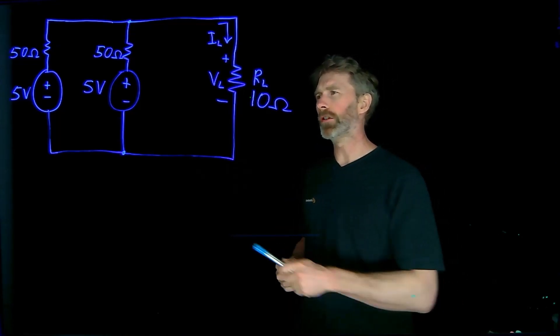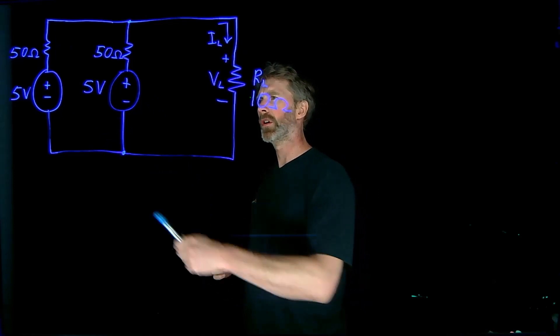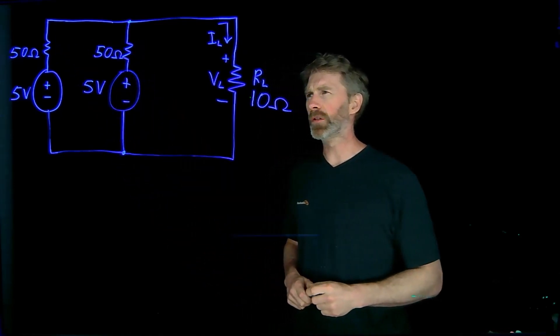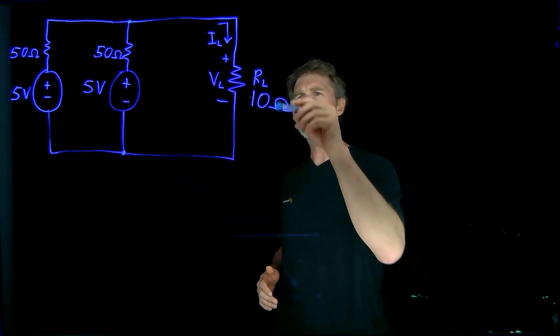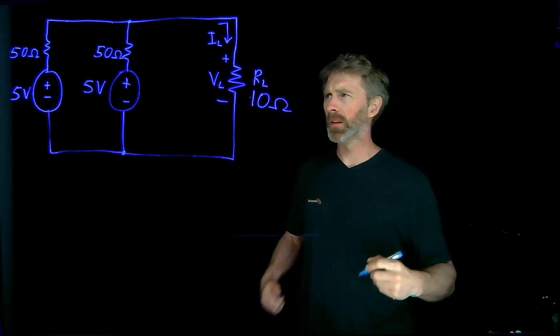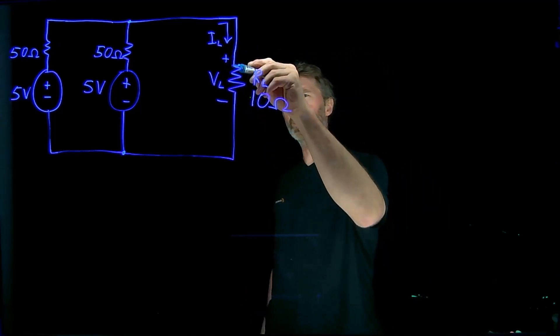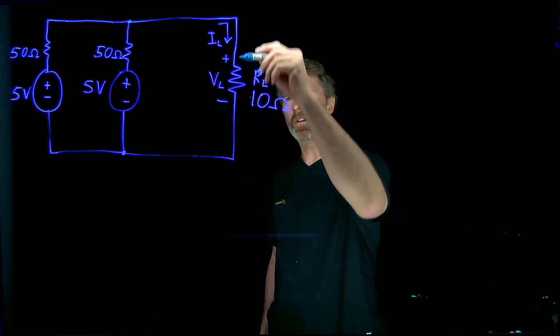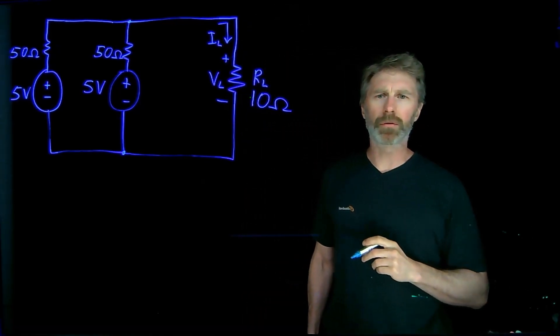So what we have here are two parallel voltage sources, each has a 50 ohm internal resistance, connected over to this load resistor that's 10 ohms. And what we want to do is figure out what is the voltage across that resistor and also what is the current through that resistor.